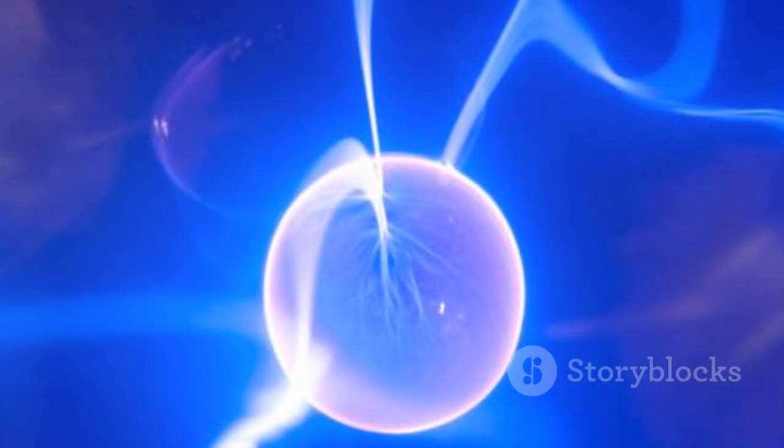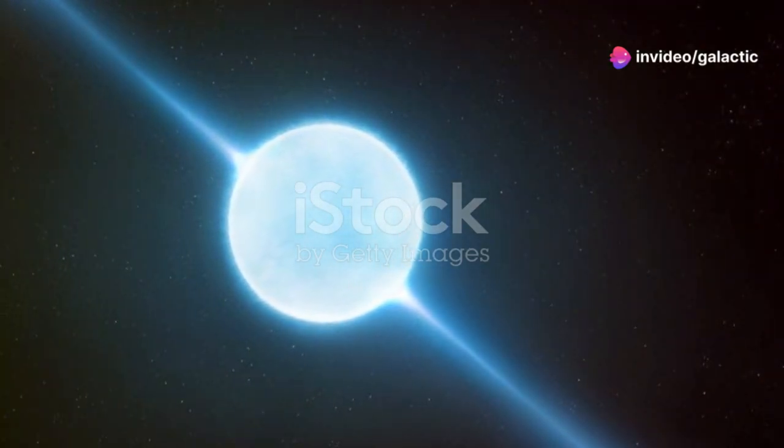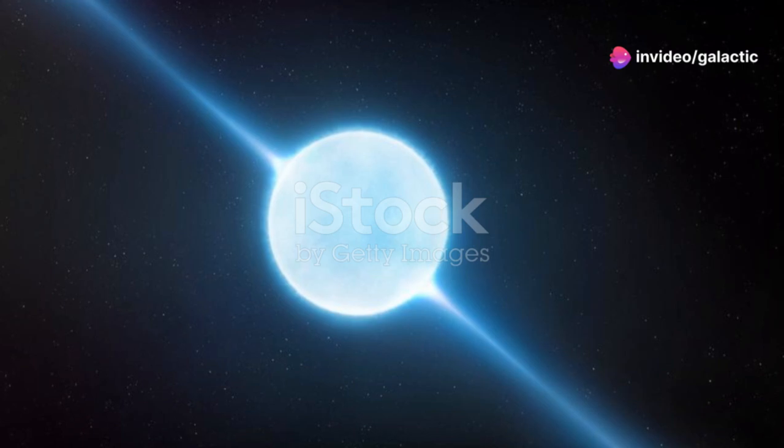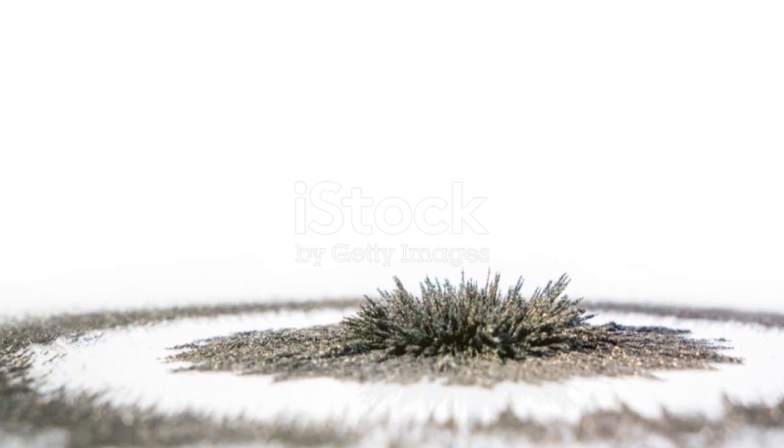Pulsars like PSR J0952-0607 also have incredibly strong magnetic fields, which play a crucial role in their behavior. The magnetic field channels particles and radiation, creating the characteristic beams that we observe.